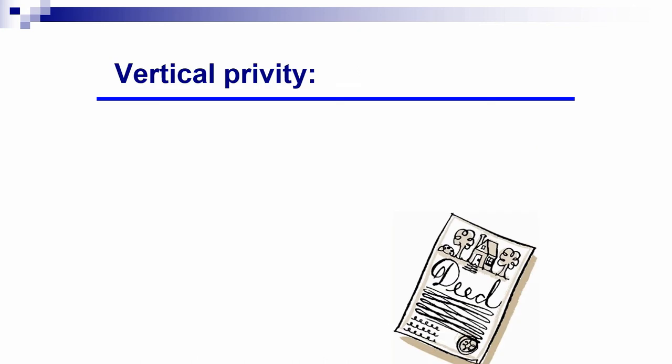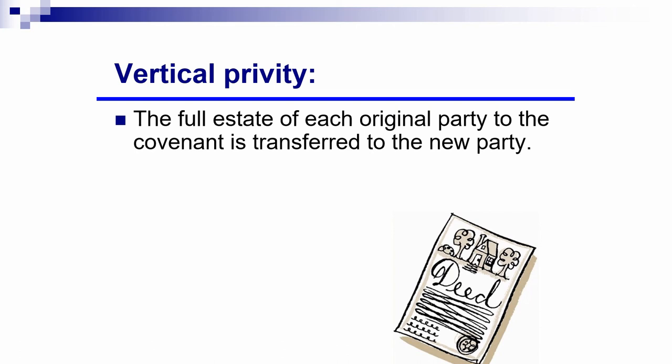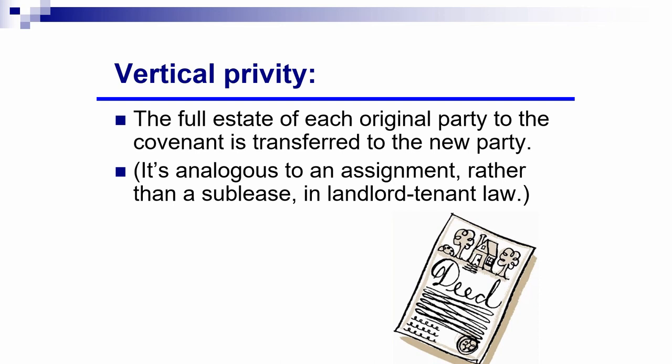Now a few words about vertical privity. Vertical privity is not a relationship between the original parties to the covenant. Instead, what's required is that the full estate of each original party to the covenant must be transferred to the new party. Vertical privity means the full estate is transferred when there's a transfer of either the benefited or the burdened land. It's analogous — if you remember our discussion of assignments and subleases in landlord-tenant law — to an assignment rather than a sublease. An assignment involves a transfer of the entire interest of the original party to the new party.